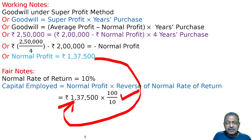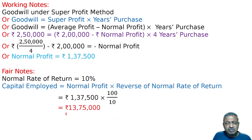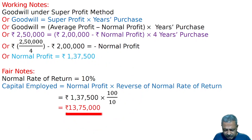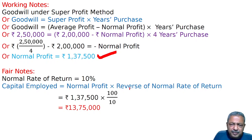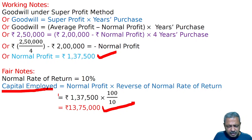That is 100 by 10, which gives Rs. 13,75,000. So capital employed is Rs. 13,75,000. You can do it accordingly. And this is all about your answer.